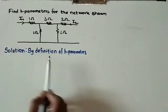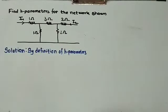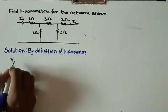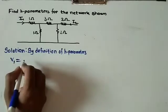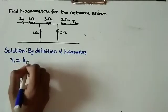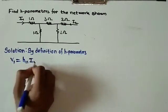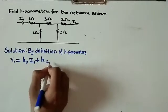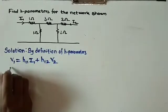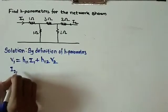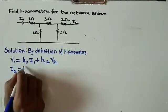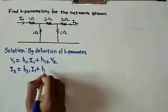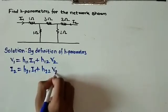By the definition of h-parameters, we will write equations: v1 equals h11·i1 plus h12·v2, and similarly i2 equals h21·i1 plus h22·v2.